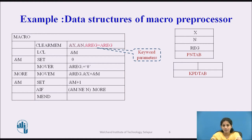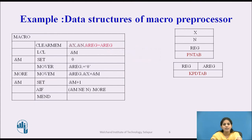Next we generate the Keyword Parameter Default Table. Here we specify the name of the parameter and its default value. The parameter name is REGISTER and it has a default value of A_REGISTER.